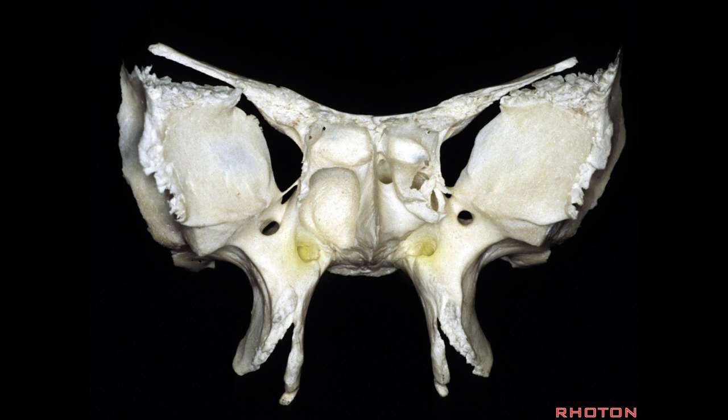In the floor of the sphenoid sinus is the vidian canal for the vidian nerve, which enters the pterygopalatine ganglion in the fossa. And here is foramen rotundum, through which the second division passes to enter the pterygopalatine fossa.